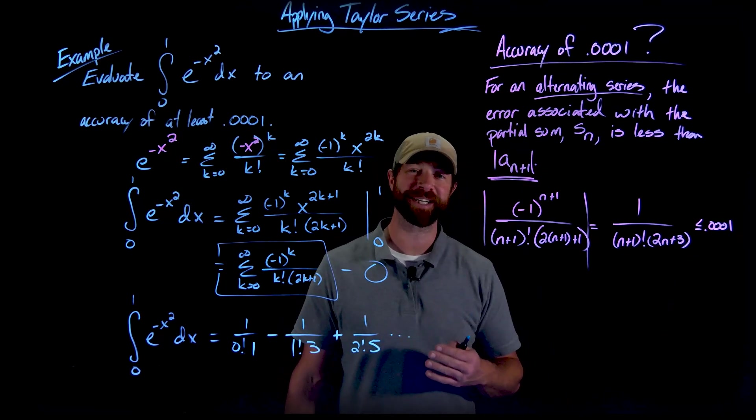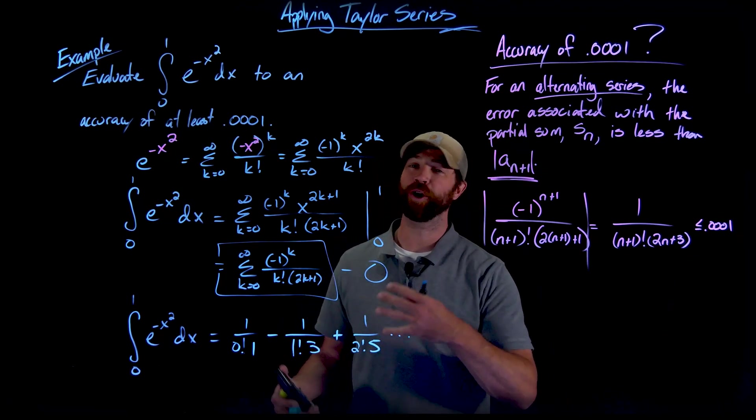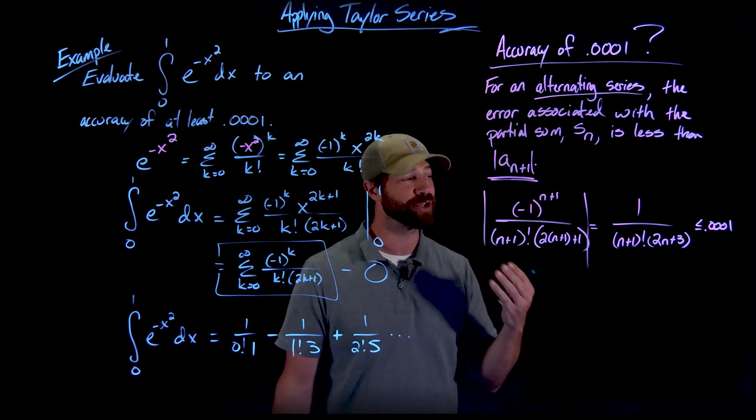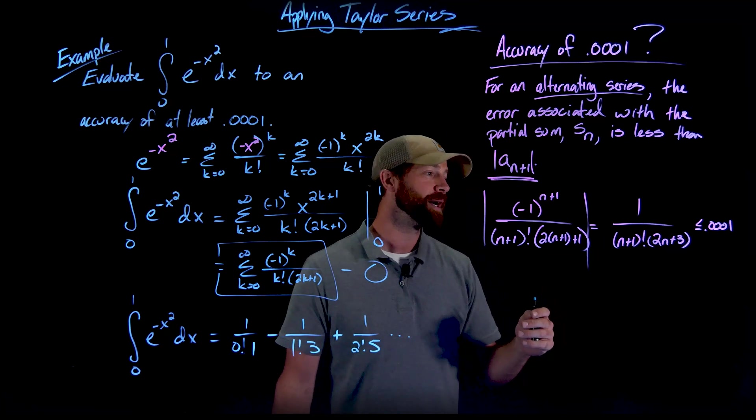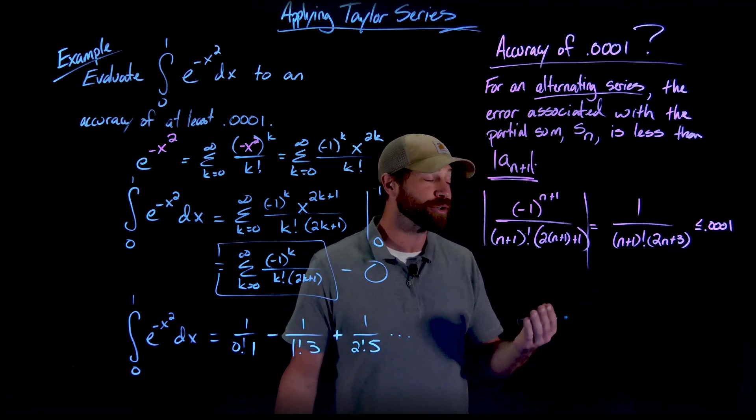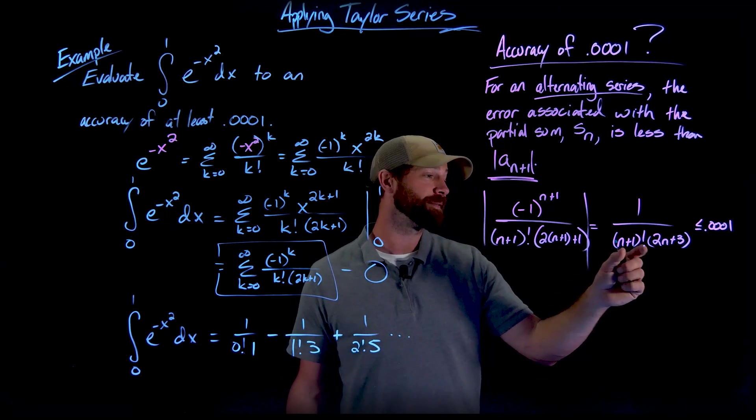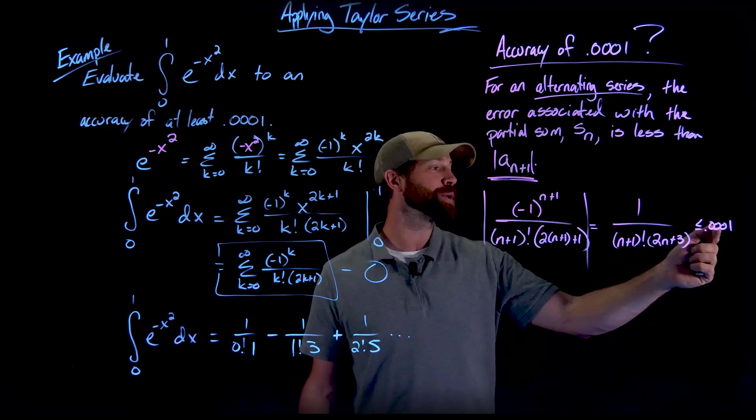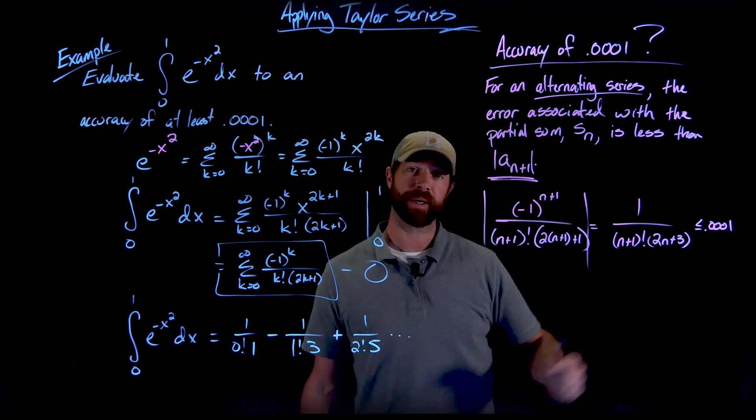And this might be a little unsatisfying if you've been following along for all the rigor and the work that we're doing. But because of this factorial statement right here, there's actually no easy way to solve this using an algebraic way of solving it. So what I'm going to do is a numerical approach. I'm going to plug in values for n right here until I get out a value less than 0.0001.